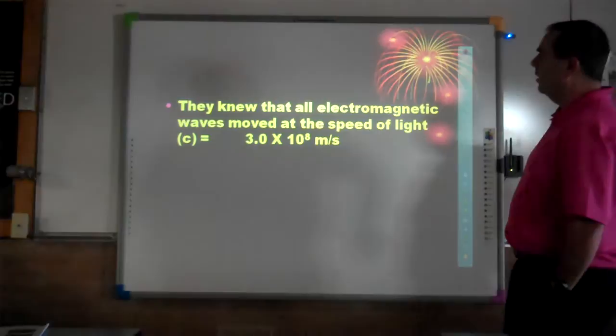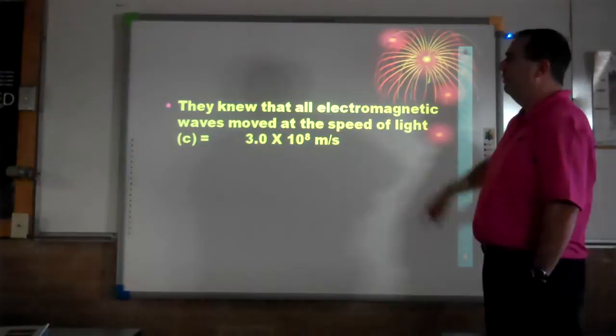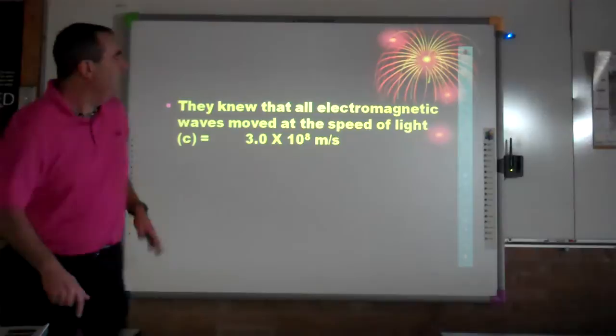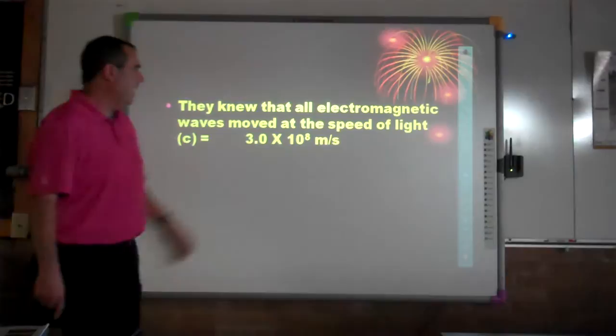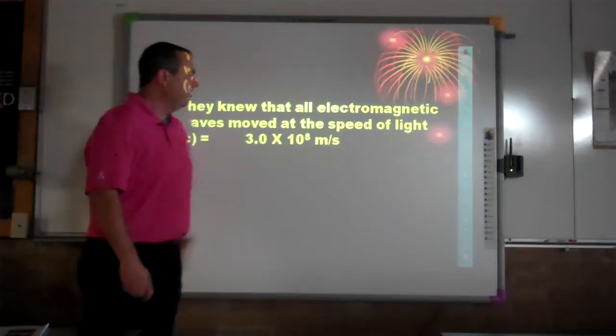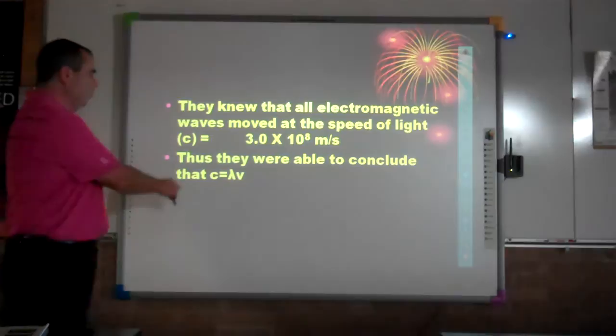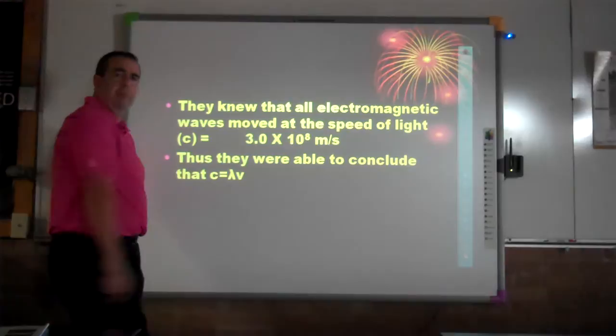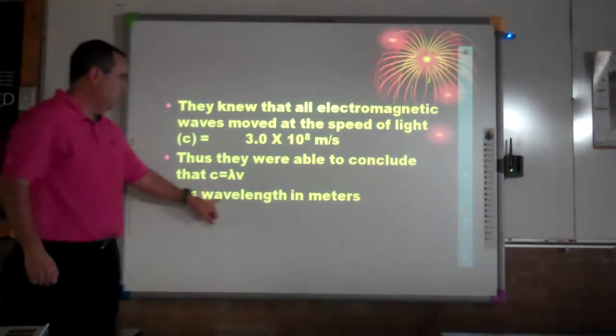All electromagnetic waves — whether x-rays, microwaves, or gamma waves — move at the speed of light. The symbol for the speed of light is c, equal to 3.0 × 10⁸ meters per second. Scientists concluded that the speed of light equals wavelength multiplied by frequency. Wavelength is measured in meters and frequency is measured in hertz.